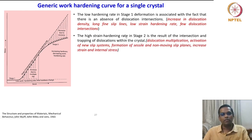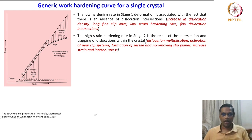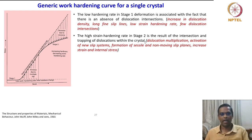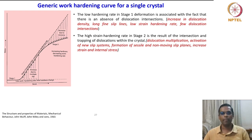The high strain hardening rate in Stage 2 is the result of intersection and trapping of dislocations within the crystal. Now we are talking about intersection — dislocations start interacting with each other. After the initial glide, dislocations start gliding in a plane without any hindrance, and as strain goes up, the number of dislocations per unit area increases, and as a result, intersections start happening.